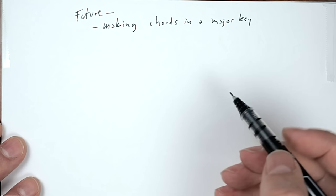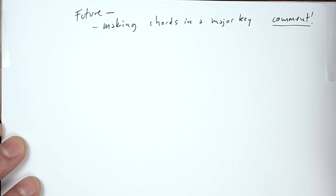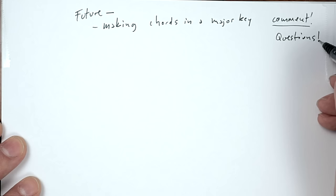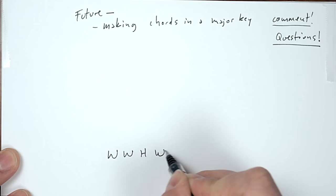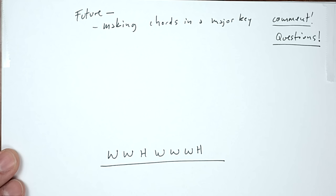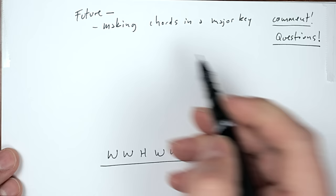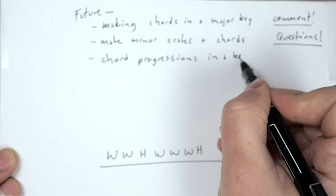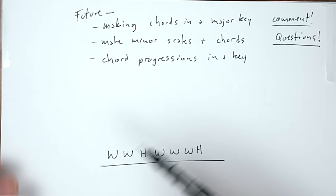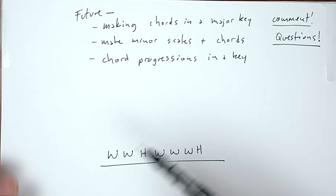In future lessons we can start making chords in a major key. If that sounds interesting, comment and let me know. There are so many possibilities — all you have to remember is whole whole half whole whole whole half. That's the secret to pretty much everything. We'll get into making chords in major keys, minor scales, and chord progressions over time.